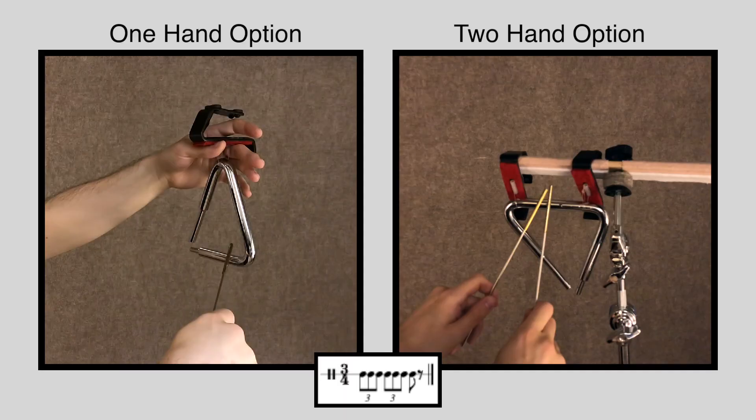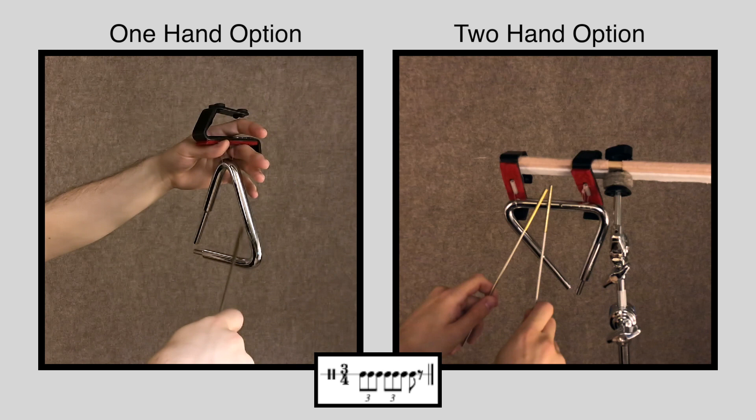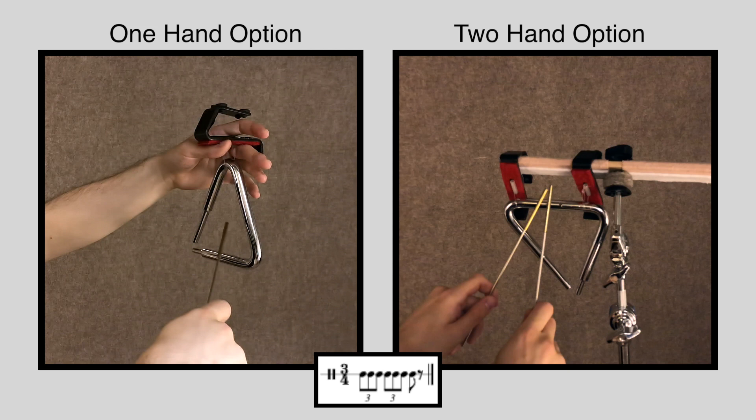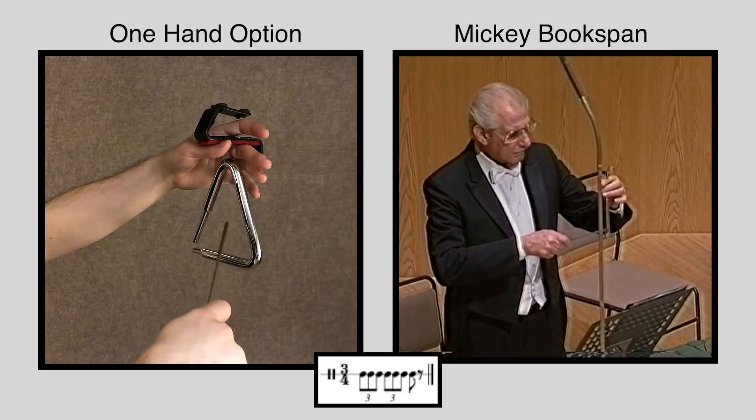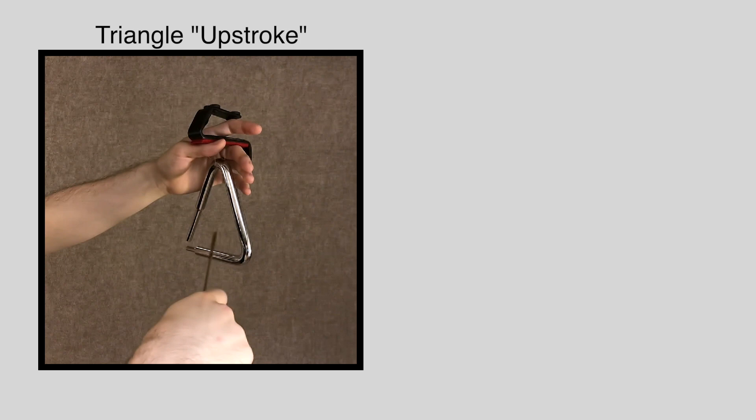So we have two options to play this part, each which produced a different sound. We can use one hand and bounce the triangle beater back and forth between the two sides in the corner. Or we can mount the triangle on its side and play the rhythm with two beaters and two hands. You might have even noticed that in the performance we just watched, the percussionist chose the first option.